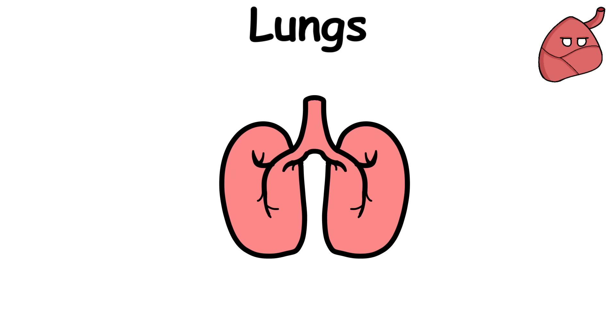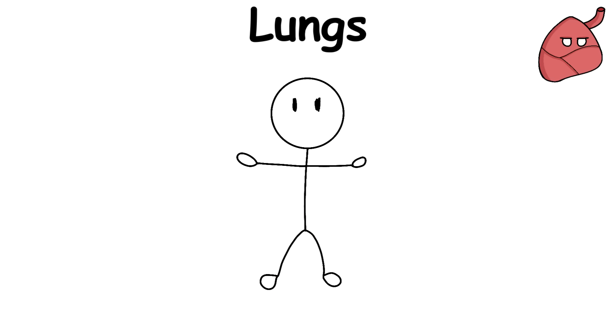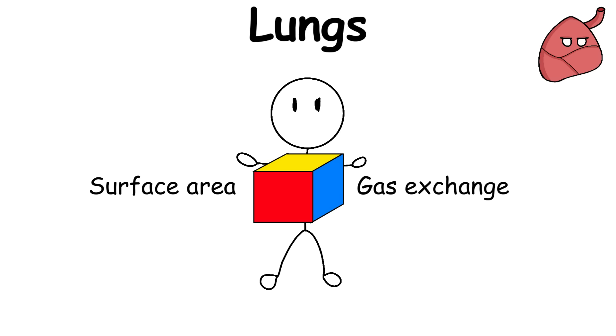Without the lungs, our blood won't be able to carry oxygen to the body, which can potentially lead to organ damage and failure. A person's lungs also have a surface area for gas exchange that's the size of a tennis court, yet they are still small enough to fit in a person's chest.